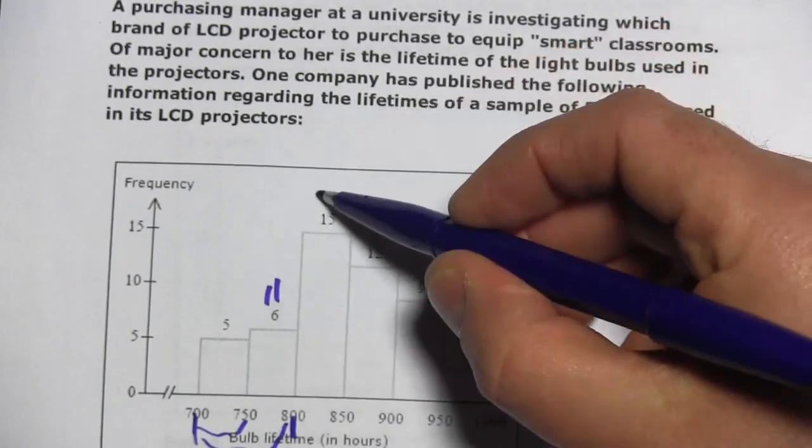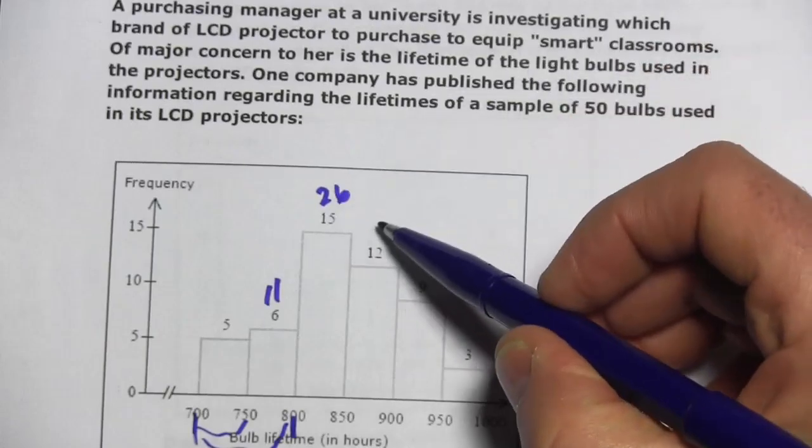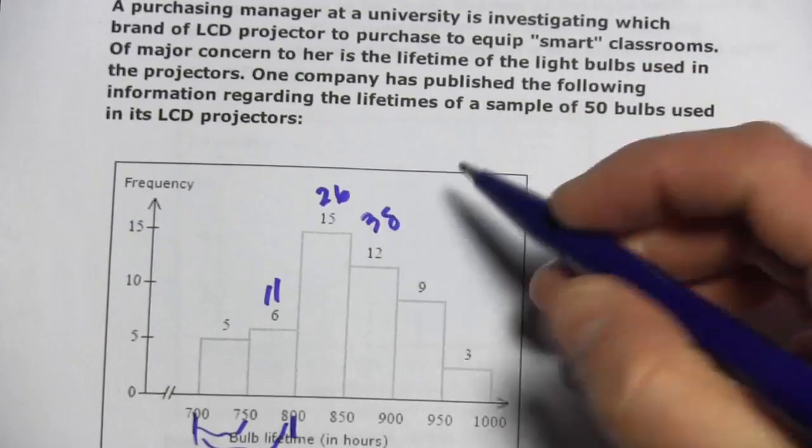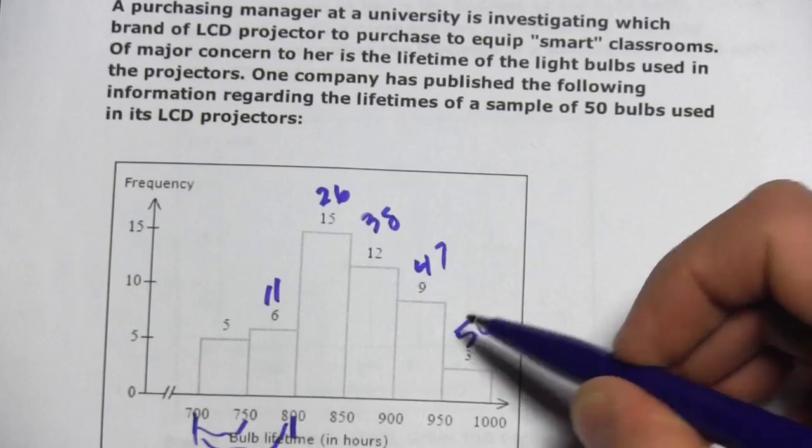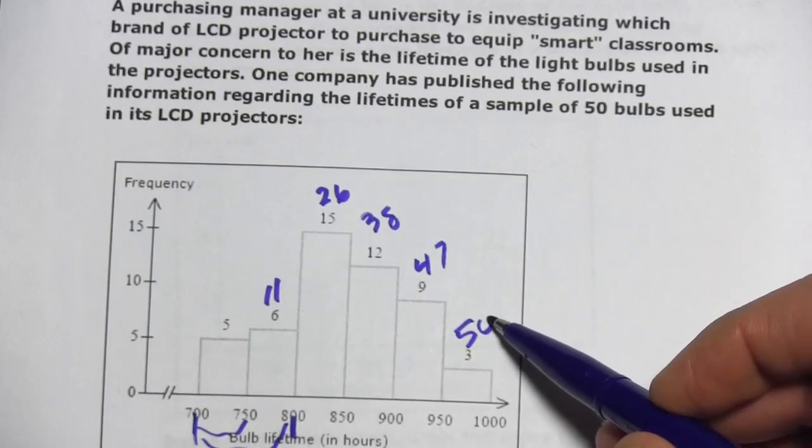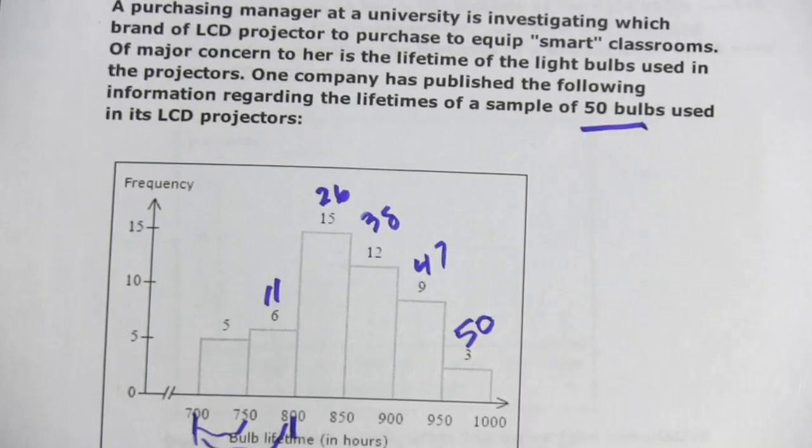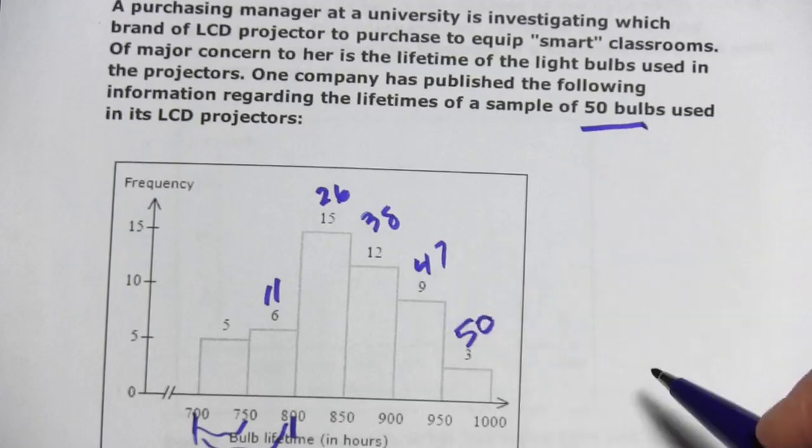11 plus 15 is 26, plus 12 is 38, plus 9 is 47, and plus 3 is 50. I ended up with 50, which is good because that's the sample size in this problem. So I know I've done something right.